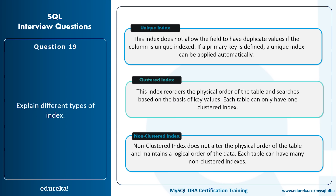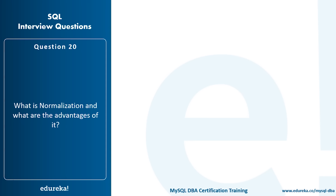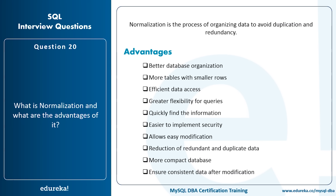What is normalization and what are its advantages? Normalization is the process of organizing data to avoid duplication and redundancy — the opposite of denormalization. Its advantages include: better database organization, more tables with smaller rows, efficient data access, greater flexibility for queries, easier implementation of security, reduction of redundant and duplicate data, a more compact database, and ensures consistent data after modification.